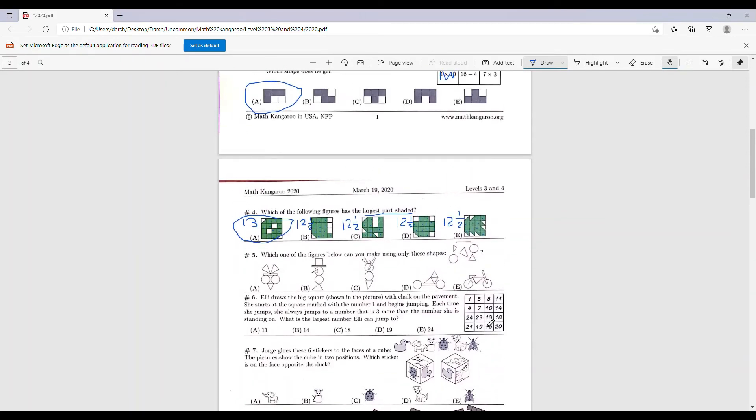Number 5: which one of the figures below can you make using only these shapes, which are over here? Let's see A. What figures does A have? A has 2 of these type of triangles, but we can only see 1 in this picture, so it can't be A.